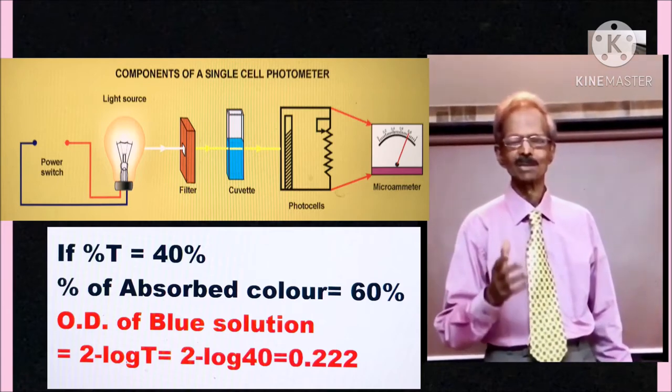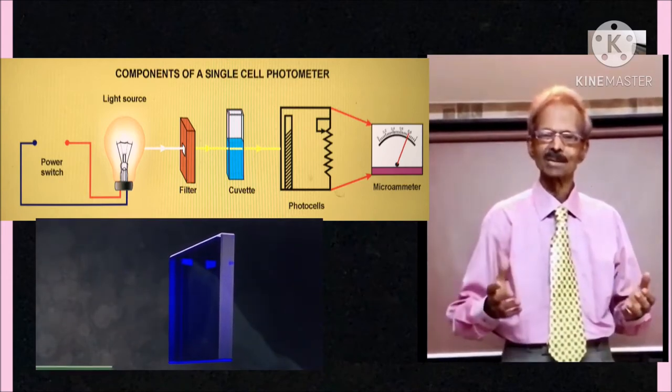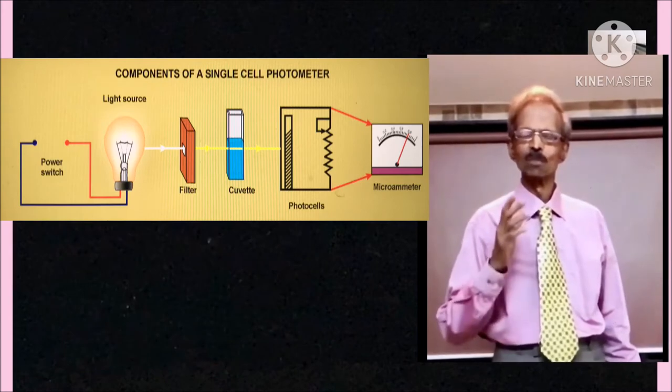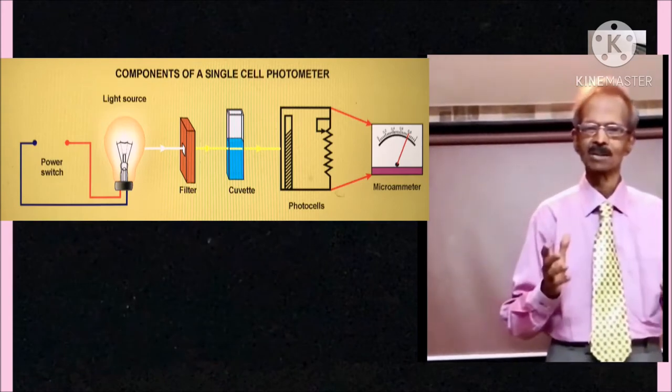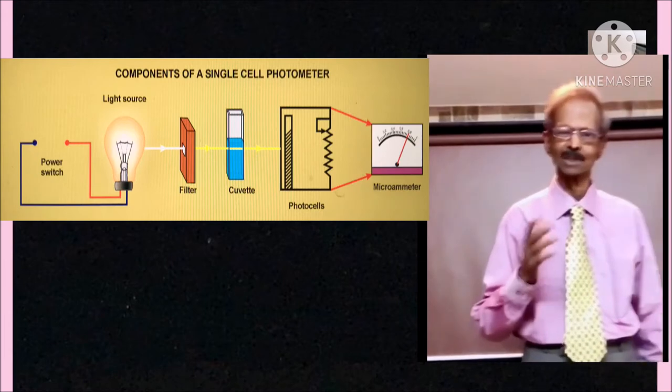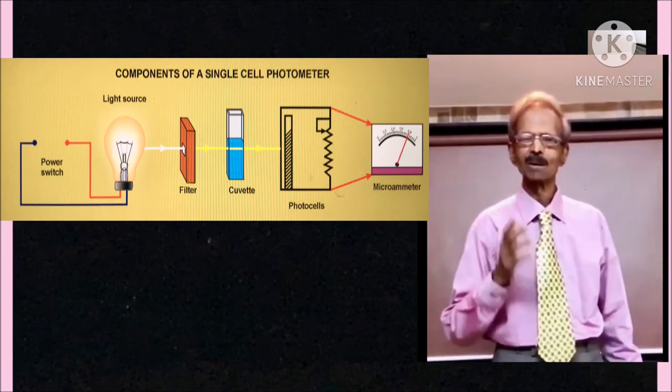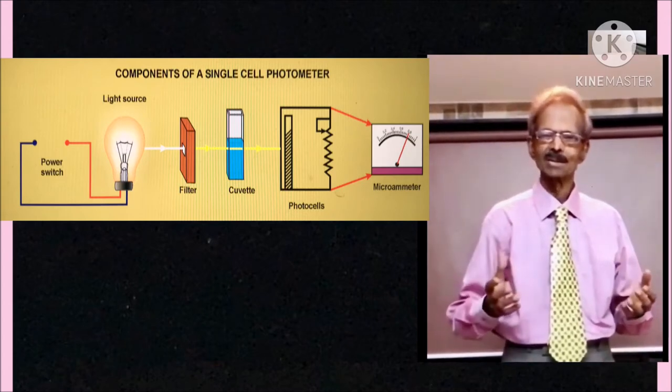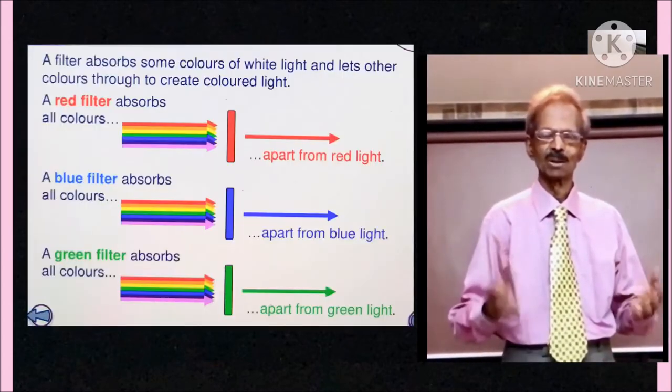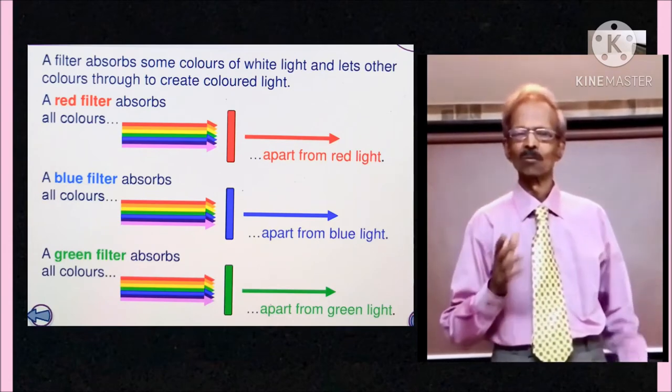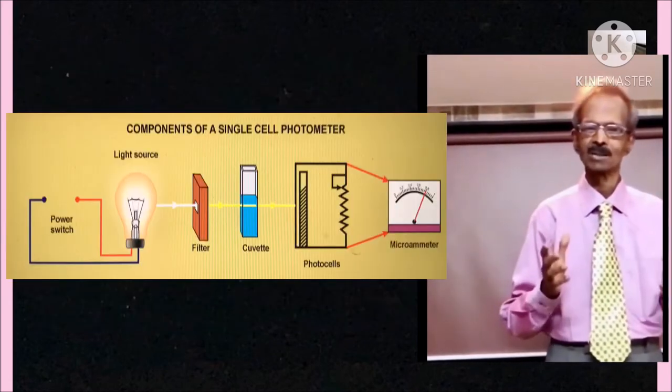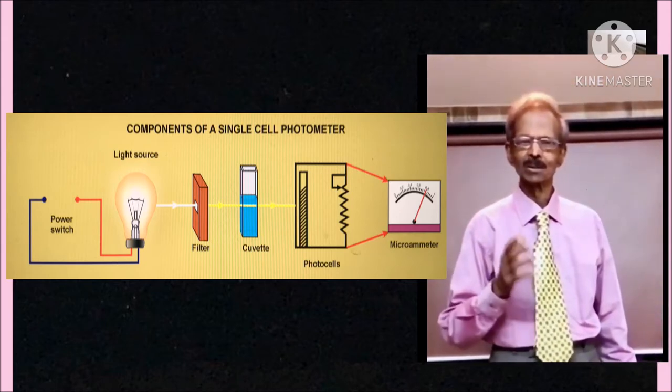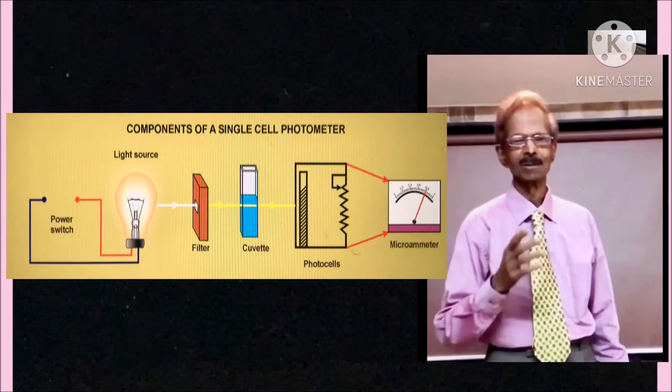In this case, if a blue filter is used, it will transmit blue band light and blue solution in the cuvette will transmit maximum proportion with minimum absorption. Hence, a red filter is used because it is a complementary filter. A complementary filter allows maximum absorption of light by solution in cuvette. For photometry, maximum absorption of light in a solution is preferred.